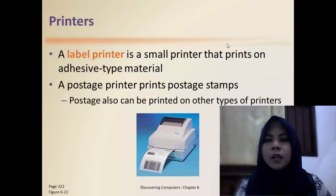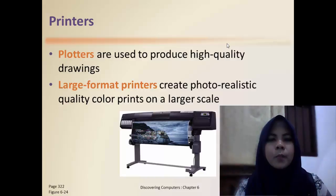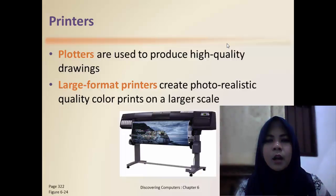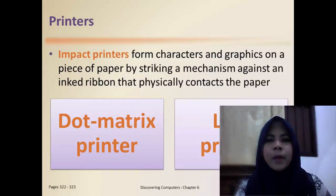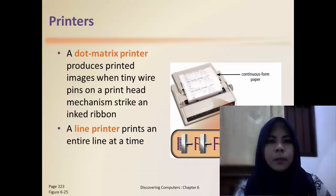A postage printer prints postage stamps. Plotters are used to produce high-quality drawings. Large-format printers create photo-realistic quality color prints on a larger scale. Impact printers print characters and graphics on a piece of paper by striking an ink ribbon that physically contacts the paper. A dot matrix printer produces an image one character at a time using a print head mechanism that strikes an ink ribbon.